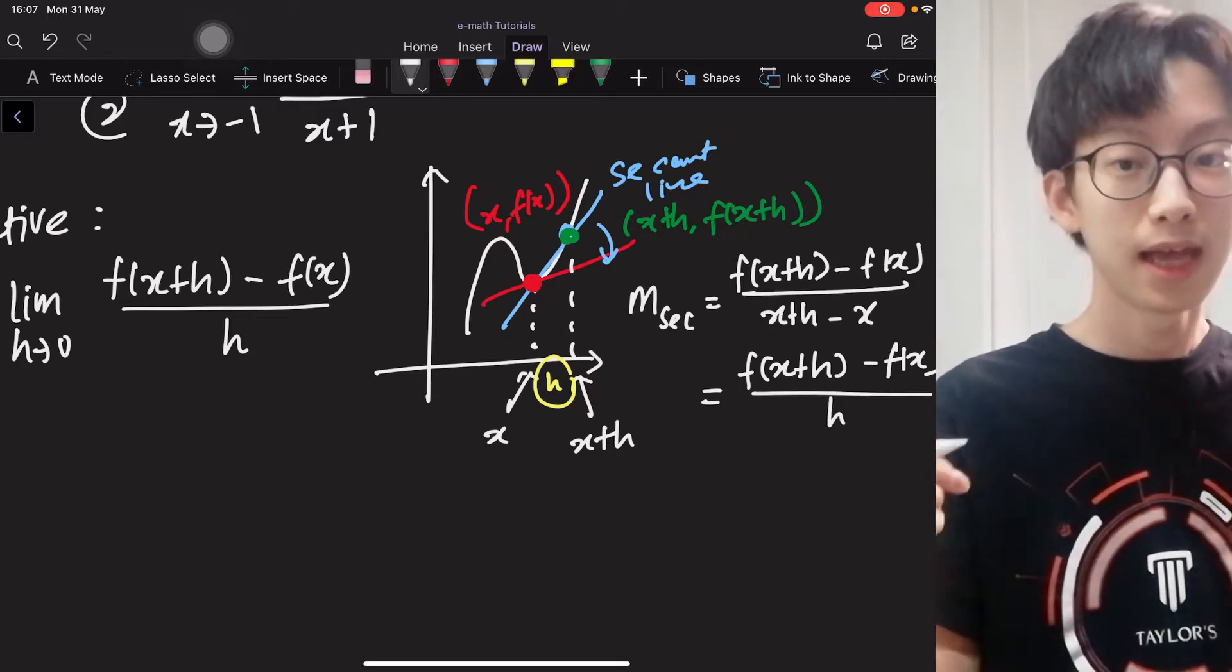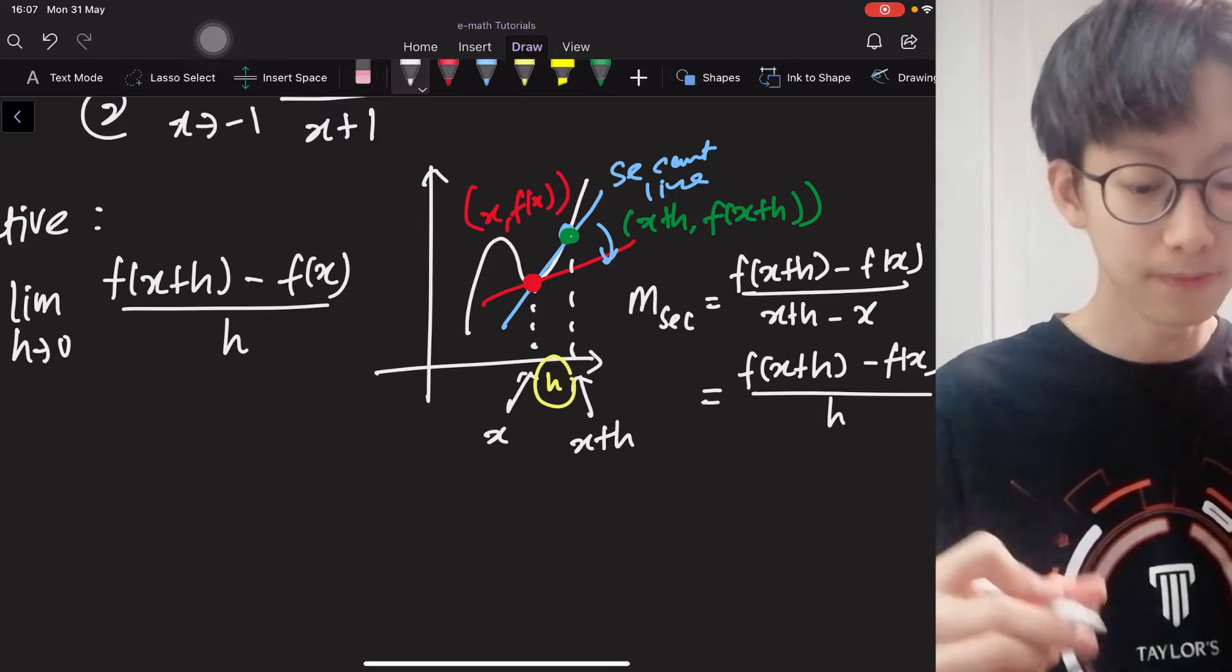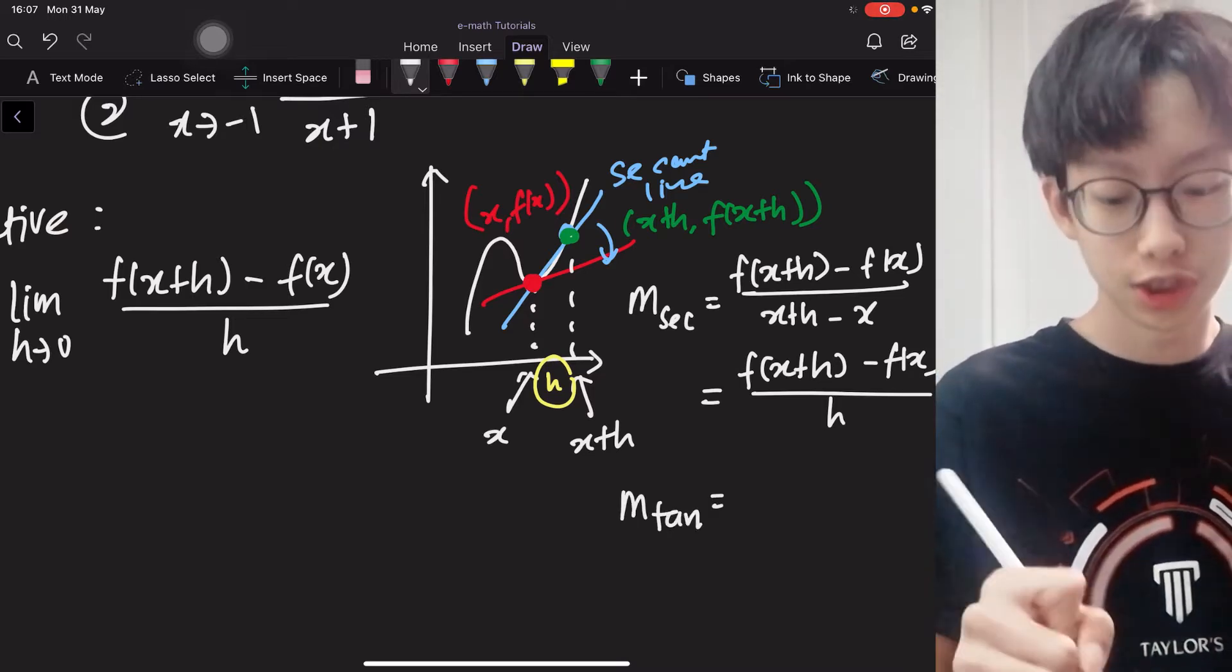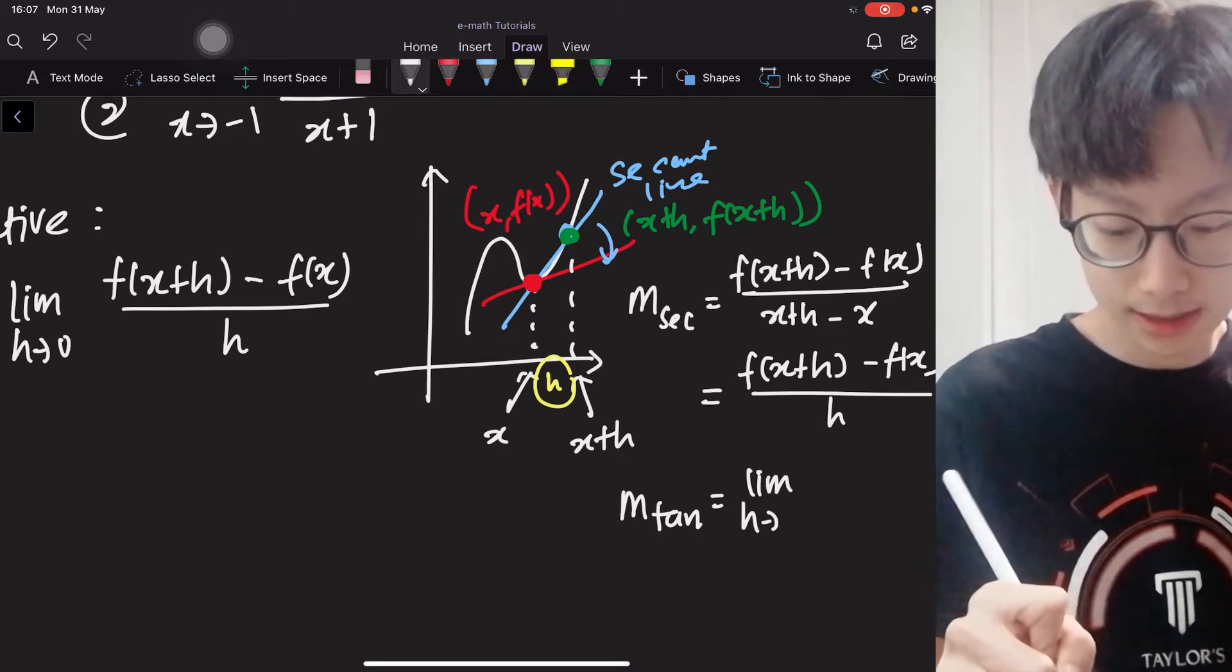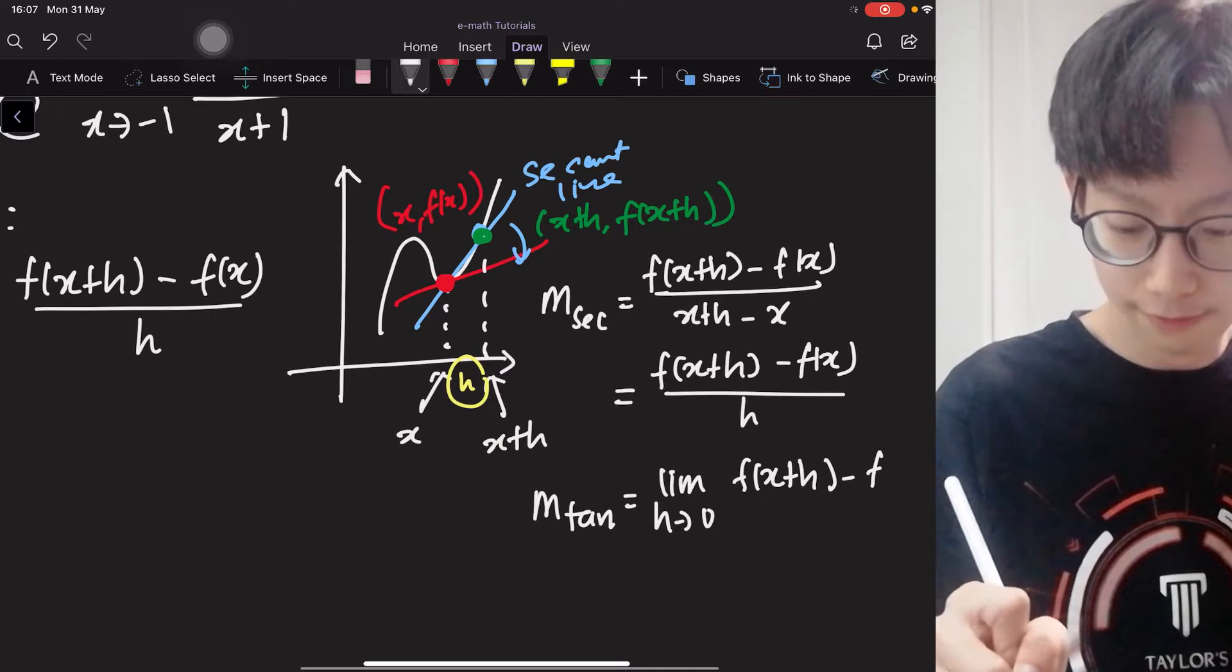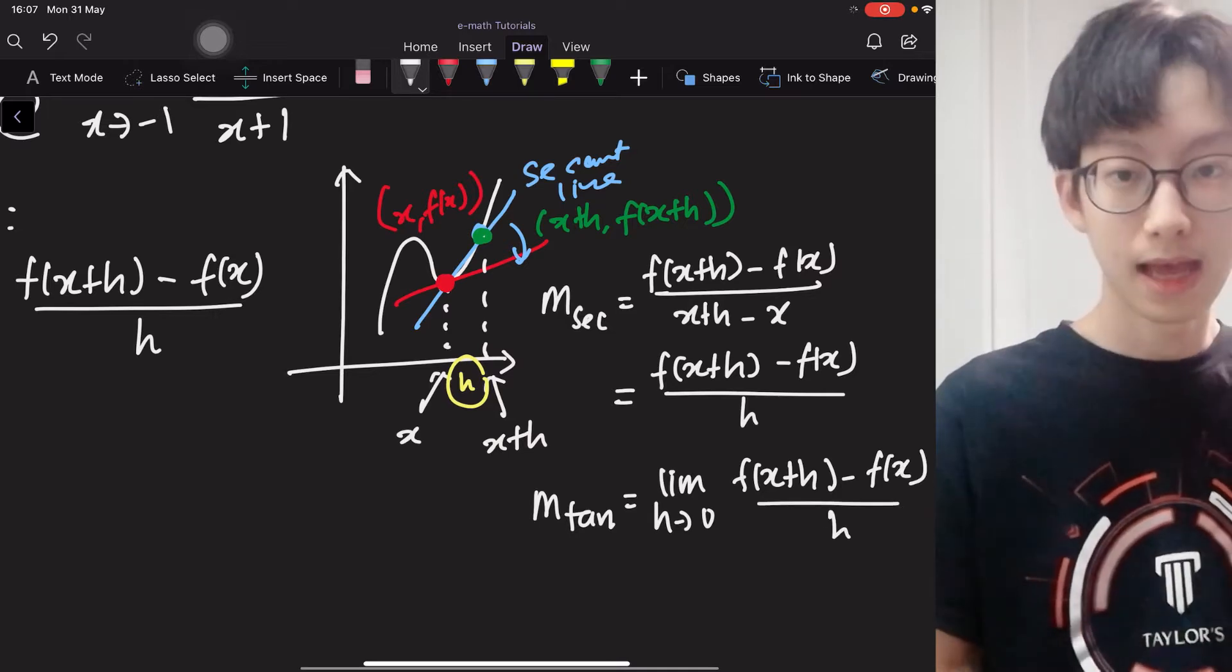And remember, we want h to be as small as possible so that we can say that it is the slope of tangent line. We are taking the limit as h approaches 0 of f(x+h) minus f(x) over h.